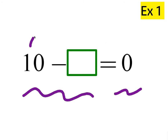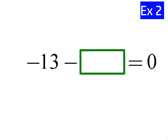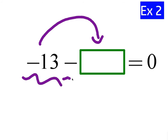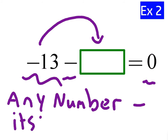10 minus what gives you 0? It would be minus itself, so 10 minus 10 equals 0. Negative 13 minus what gives you 0? Don't make the mistake of switching the sign — you don't subtract positive 13, you subtract itself. Any number minus itself is 0.